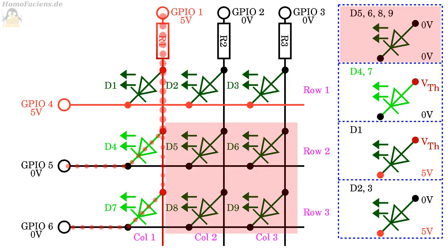The situation at LEDs 5, 6, 8, and 9 remains unchanged. Here as before, 0V are applied to both the cathodes and the anodes. Now only twice the diode current flows out of GPIO 1, which is split up to the two current sinks, GPIO 5 and 6.